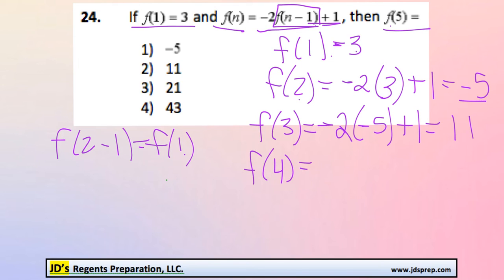Next, f(4) is going to be -2 times the previous term. Again, that's 11 plus 1. Negative 2 times 11 is -22. And then -22 plus 1 is -21.